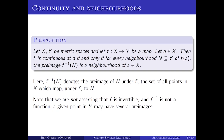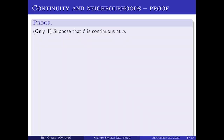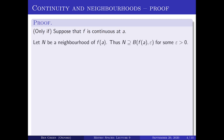We'll give the proof on the next slide. It's somewhat long as written, but if you think about it the right way it ends up being almost a tautology. Let's look at the only-if direction first. Suppose that f is continuous at a. Let N be a neighbourhood of f(a), meaning N contains some open ball about f(a) — say that open ball has radius epsilon. N contains that ball.